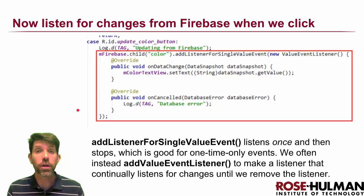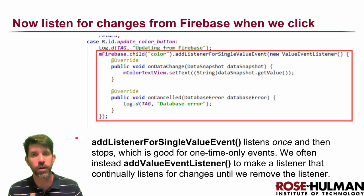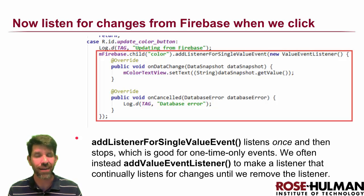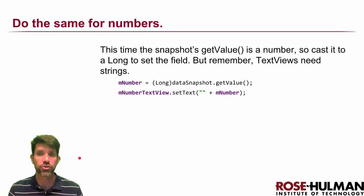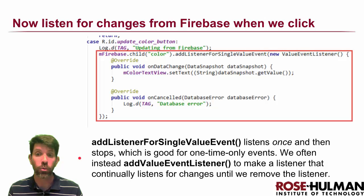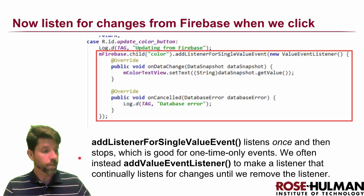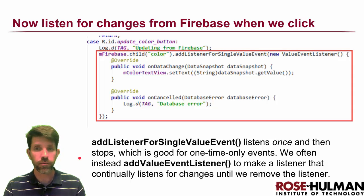We used addListenerForSingleValueEvent, which is good when you just want the value on demand. If you want it to listen continuously in the background without a button click, you can use addValueEventListener, though you'll need to remove that listener later. There's also a ChildEventListener we'll use for the movie quotes app later, which has other useful methods.